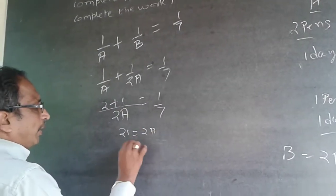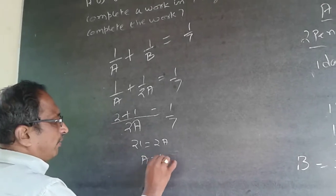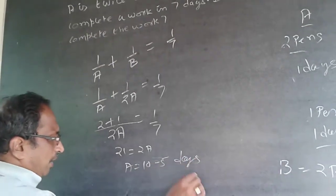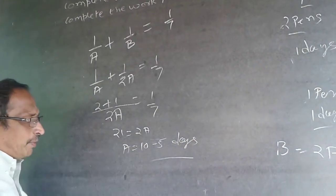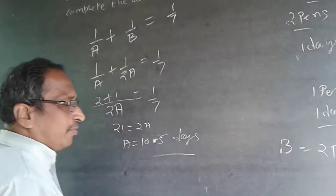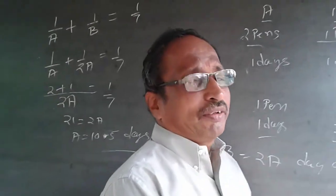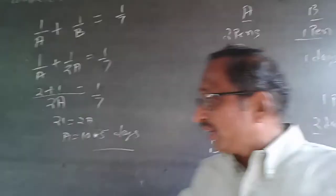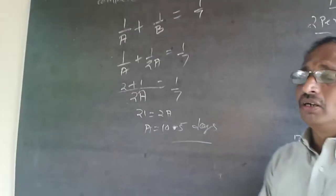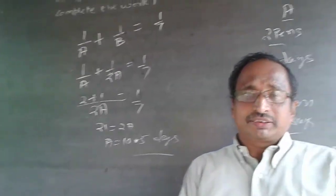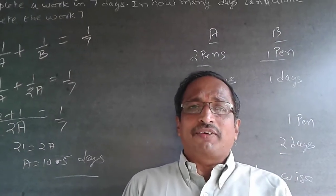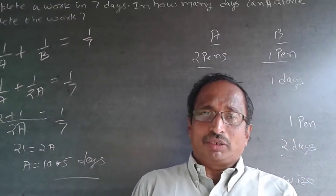Therefore A equals 10.5 days. A will complete the work in 10.5 days and B will take 21 days. Subscribe to my channel — I will be adding questions every now and then. Wish you all the best.